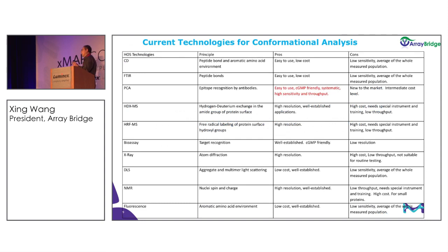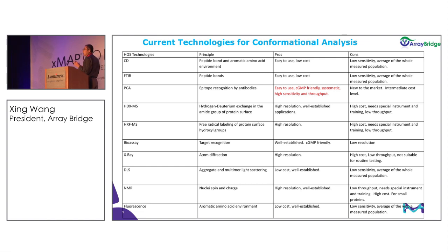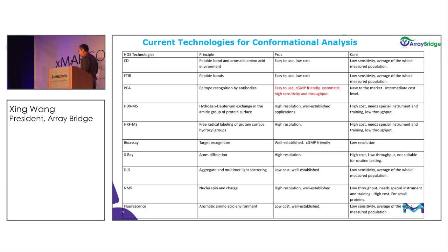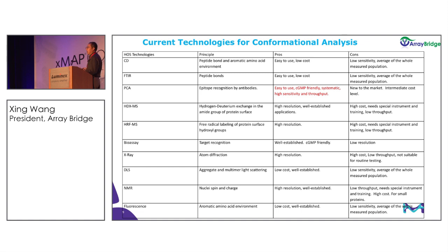Here is a comparison of the different technologies we are currently using for biologics' higher-order structure. The key message is that the PCA technology we are developing can provide a more GMP-friendly, more sensitive, and high-throughput capability — overcoming almost all the limitations of current technologies used in biological development.